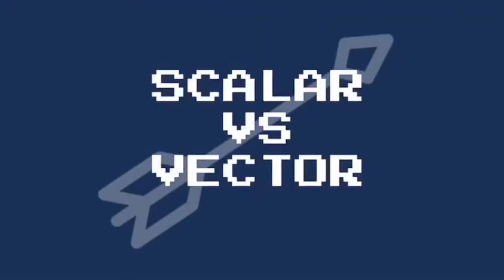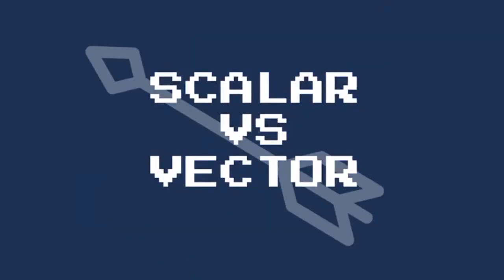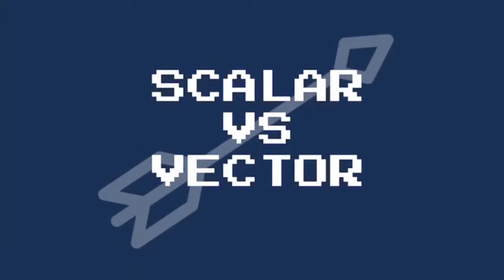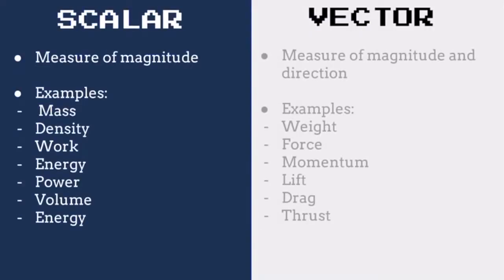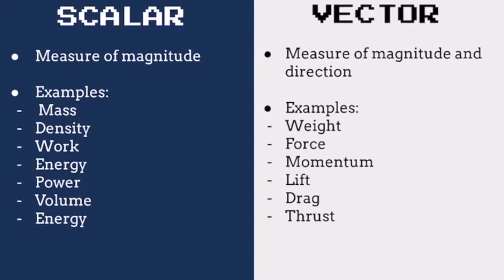There are two types of physical quantities, separated into two categories called scalar and vector. Scalar quantities have magnitude only, meaning that they only involve numerical values. Some examples of scalar quantities are mass, power, and energy.